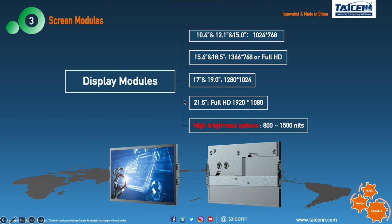Tyson has four dimension display module inventory from 10.4 inch to 21.5 inch. We have several options — widescreen 15.6 inch and 18.5 inch with two resolution options each. We also support high brightness options, typically 500 to 1500 nits, and we can support optical bonding technology for specific touch requirements or special industry projects.